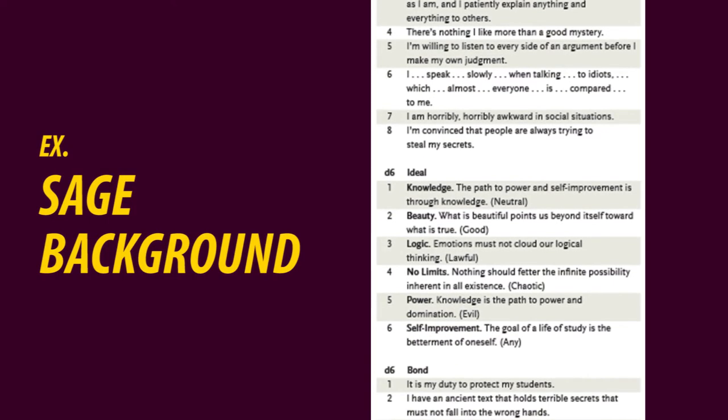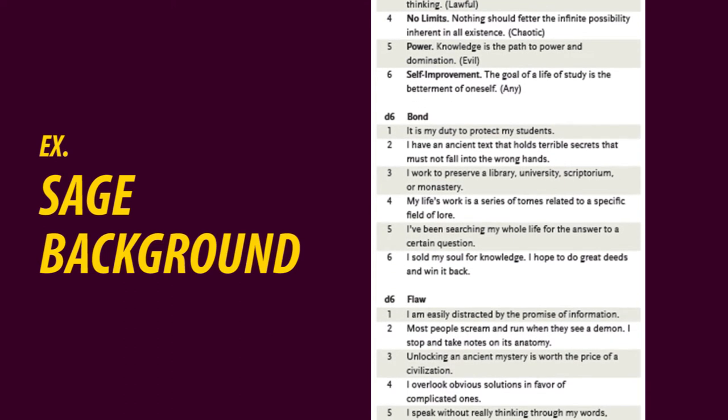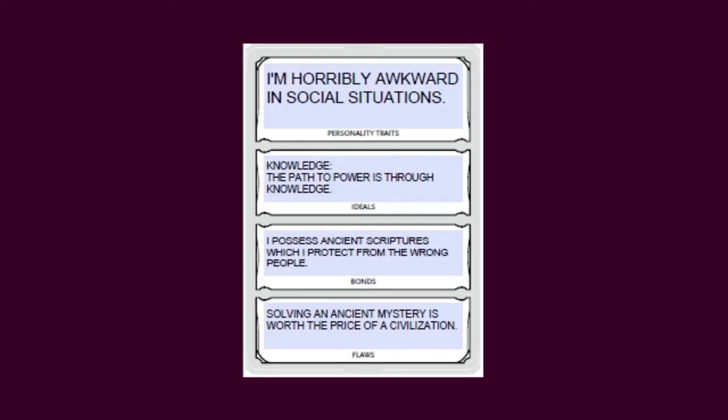If you want to use dice to decide this section, head over to your background — each background has its own personality traits, ideals, bonds, and flaws. As I have a concept in mind, this is what I want my character to be like: a bit awkward in social situations, and as a neutral, on the path of knowledge. I also want him to possess some ancient truths which he protects from the wrong people. And finally, because he is so knowledge-thirsty, he is ready to sacrifice civilizations for the sake of solving ancient mysteries. This section doesn't give any special advantages — it's just a guide to how you should roleplay your character's personality.